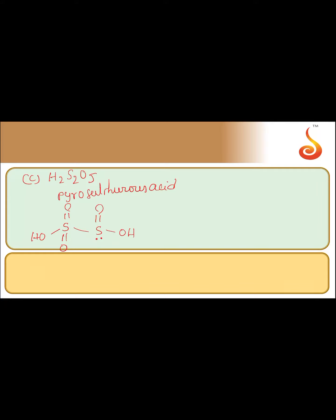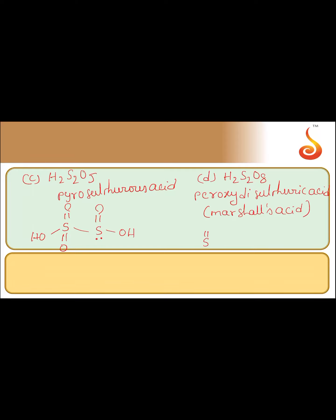Next, option D is H₂S₂O₈. It is peroxydisulfuric acid, also called Marshall's acid. From the name itself we can understand that it contains a peroxy linkage.